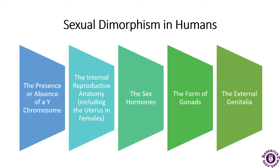Males have larger hearts, ten percent higher production of red blood cells, and higher hemoglobin, meaning they can hold more oxygen. They also have more clotting factors in circulation. These variations result in quicker wound healing and greater tolerance for the peripheral veins. This covers sexual dimorphism in humans.